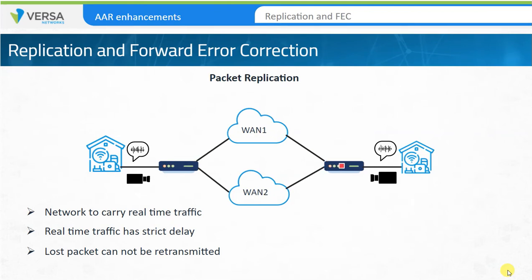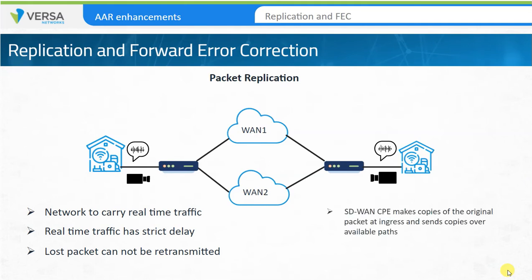An SD-WAN node does two things when packet replication is enabled. First, it makes copies of the original packets and sends a copy over all the available paths to the destination. Second, the remote SD-WAN node discards duplicate packets and sends only one copy to the end recipient. Of course, this results in higher bandwidth utilization, and therefore may not be a good solution for all traffic or in all scenarios.